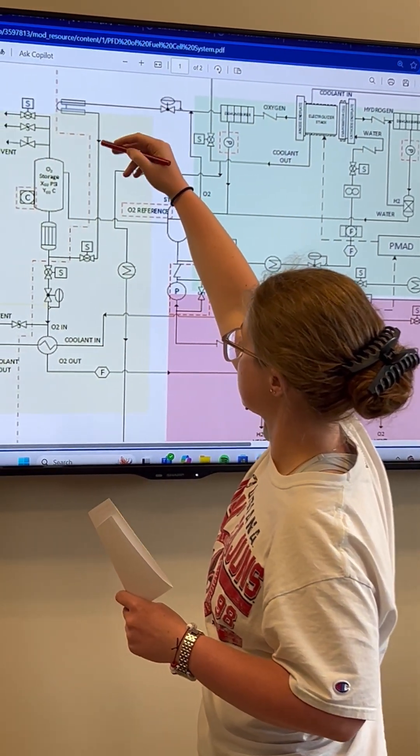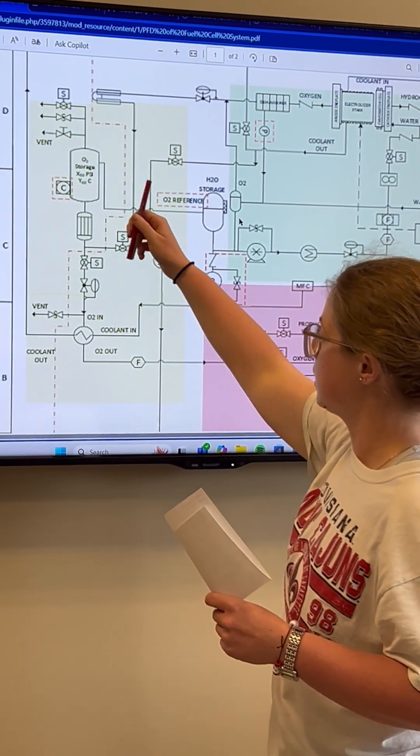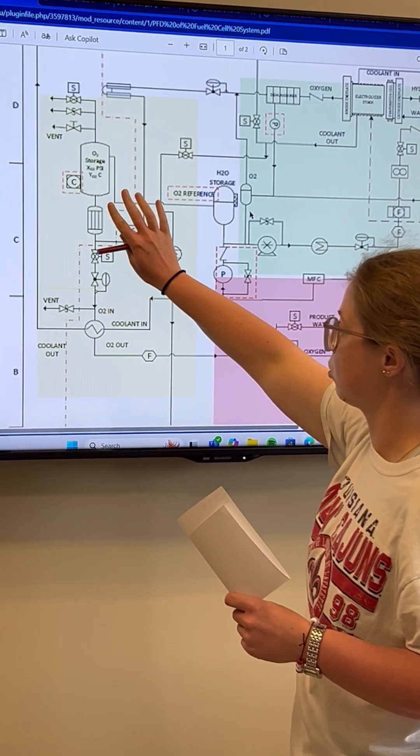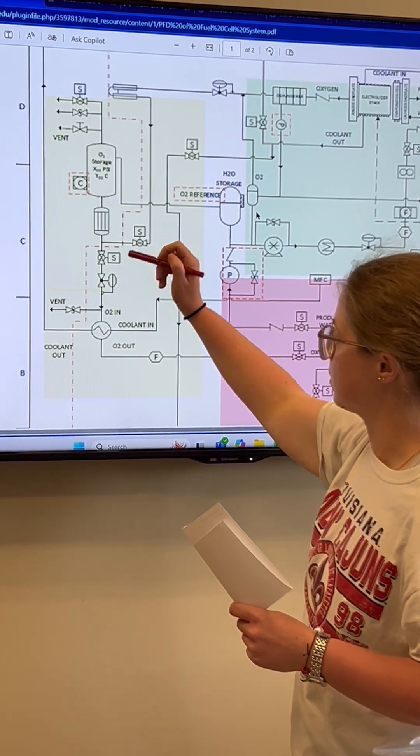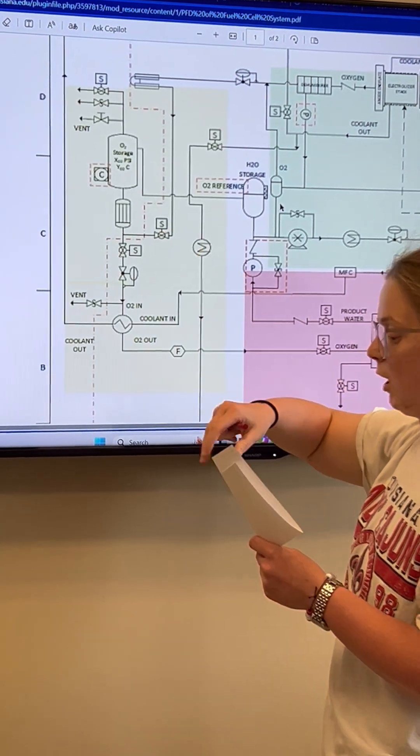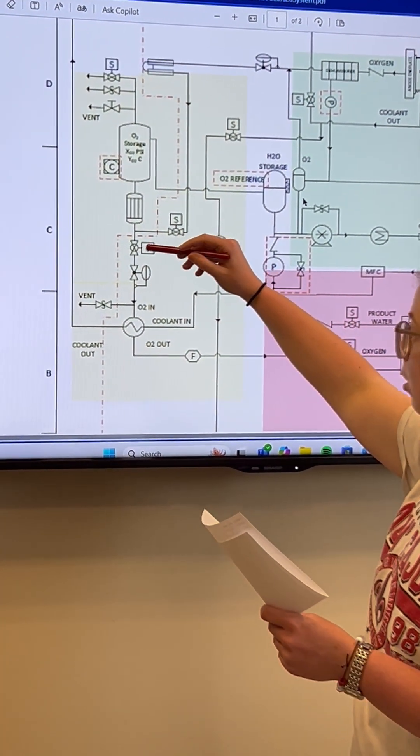We'll have oxygen coming in through this ball valve—the oxygen from the O2 storage that's been cooled and had the ice crystals caught. We meet at this junction, then come to another solenoid ball valve.